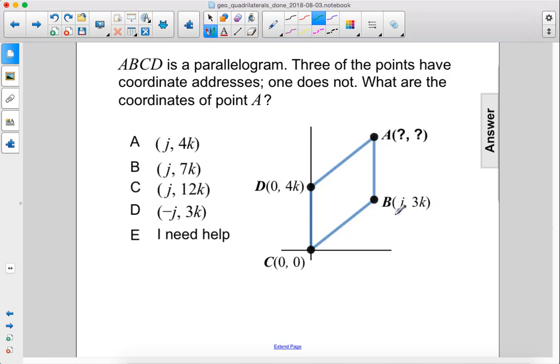We see that the x coordinate j does not change between points A and B because we're just moving up vertically from this point. Therefore, the x coordinate is also going to be j here because that's what it is here.